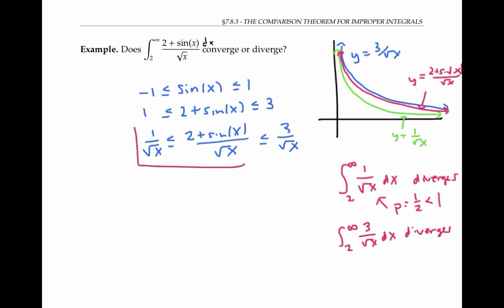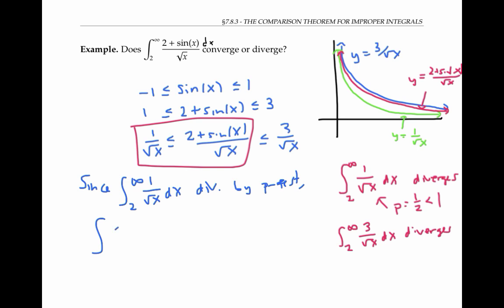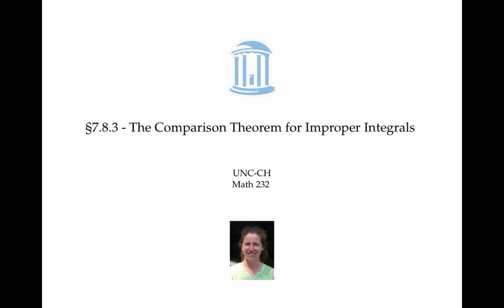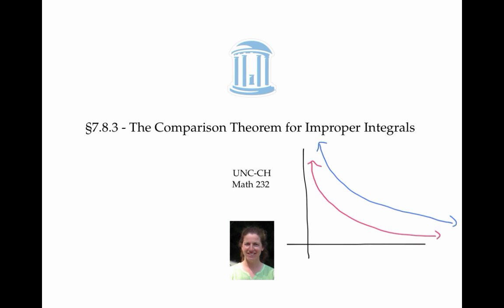And now we can say that since the integral from two to infinity of one over the square root of x dx diverges by the p-test, the integral of our function also diverges by the comparison test. In this video, we saw that if we have two positive functions and one function is always less than or equal to the other on an interval, then if the smaller function's integral diverges, the bigger function's integral also has to diverge. And if the bigger function's integral converges, the smaller function's integral also has to converge. That's the comparison theorem.